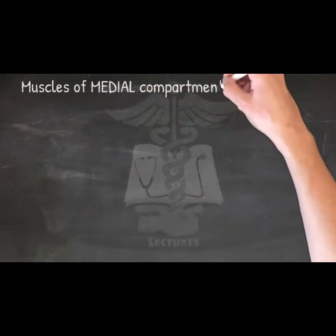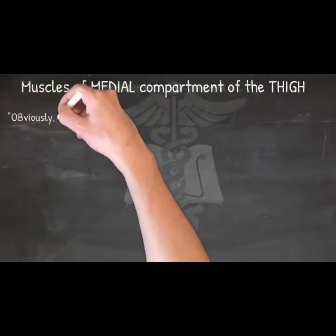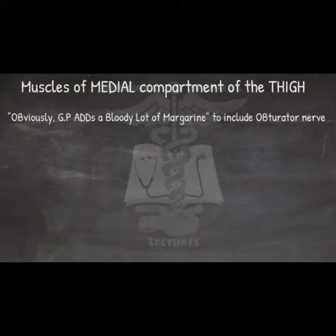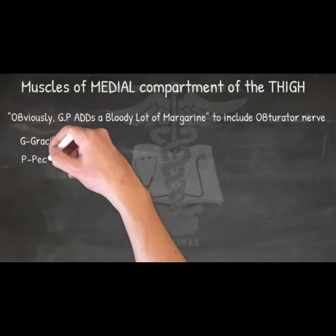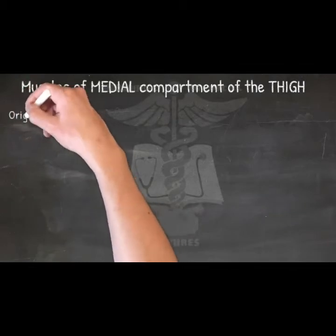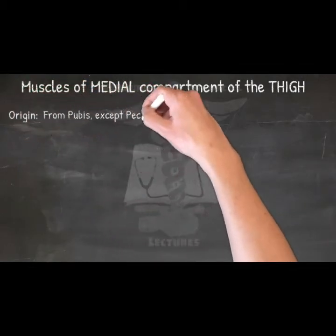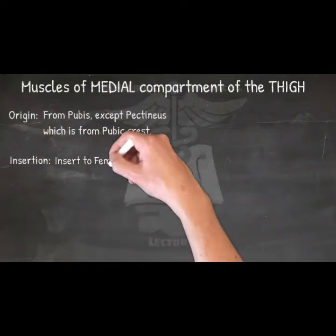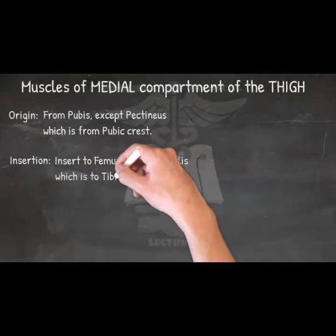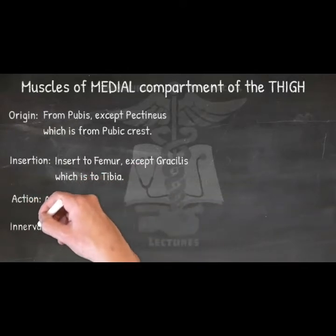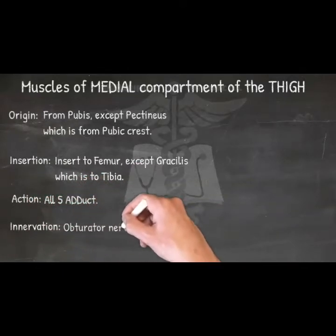Muscles of the medial compartment of the thigh — mnemonic: 'GP Adds A Bloody Lot Of Margarine,' to include obturator nerve. The adductors brevis, longus, and magnus. Origin: ischiopubic ramus. Innervation: all by obturator nerve L2, L3, L4.